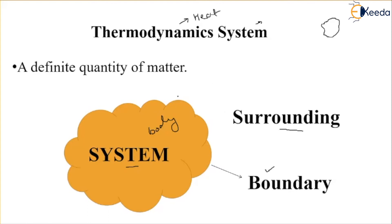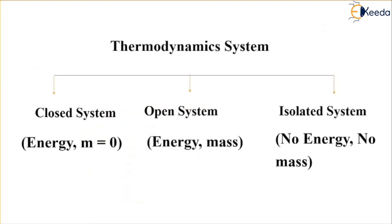When we apply temperature or heat application, the system becomes a thermodynamic system. Now let's discuss the basic types of thermodynamic system. There are three types: one is the closed system, another is the open system, and the third is the isolated system. I will discuss these one by one.